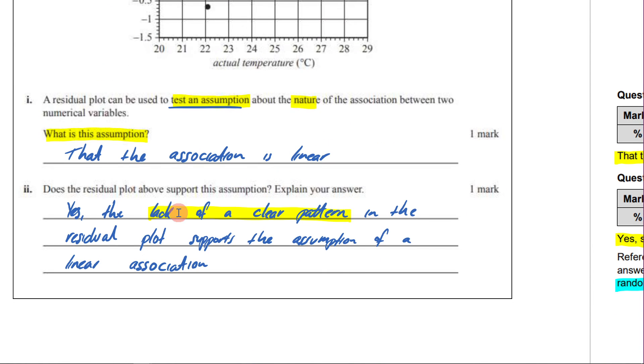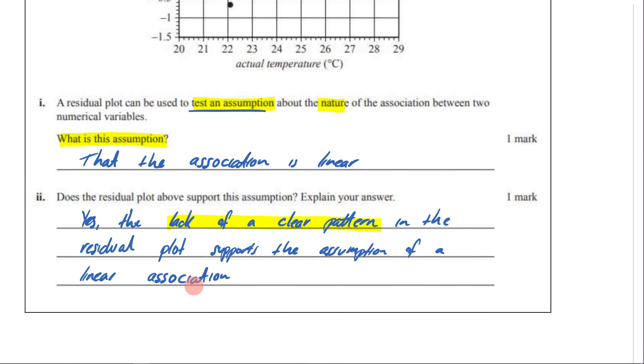So if you just said that it's evenly split above and below, you wouldn't have gotten your mark. What they wanted to see was yes, lack of a clear pattern. That is what they wanted, because that tells you that you most likely have a linear association. Hopefully that makes sense and that you feel comfortable with this question. Make sure to reach out if you have any questions.